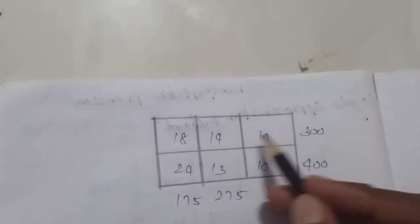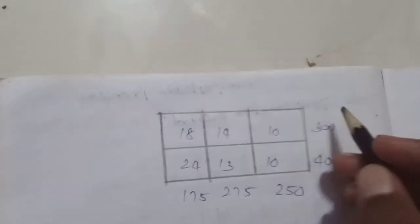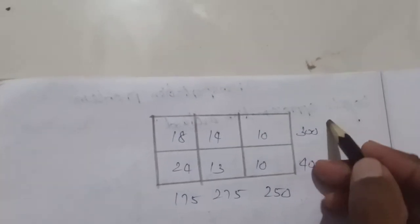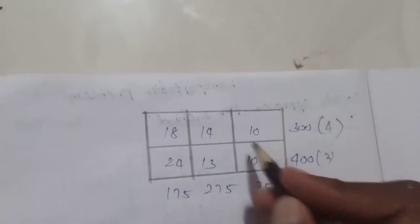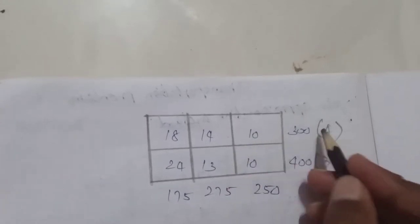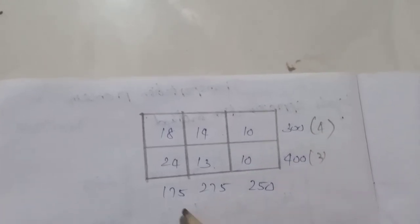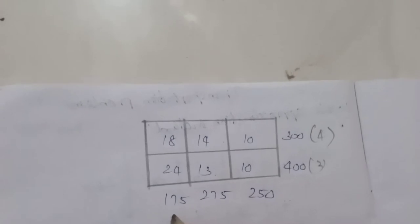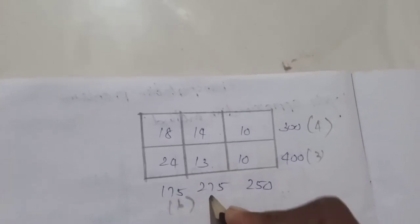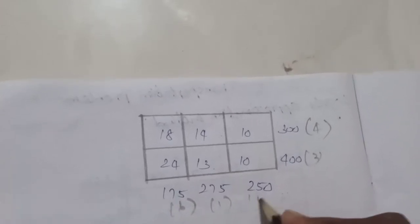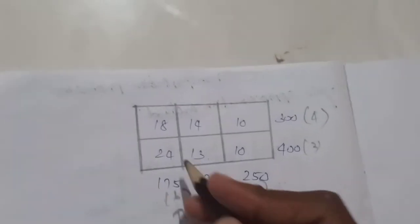We now add the next penalties. The least two numbers give: 14 minus 10 equals 4, 13 minus 10 equals 3, 24 minus 18 equals 6. Here the penalties are 1 and 0. The maximum penalty is 6, and the minimum value in that column is 18.